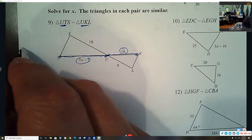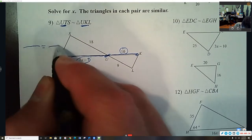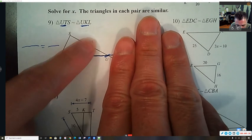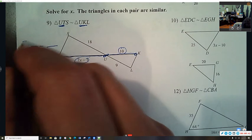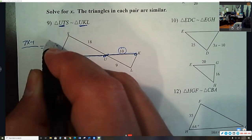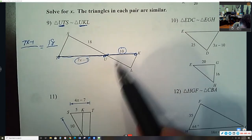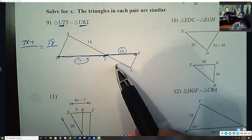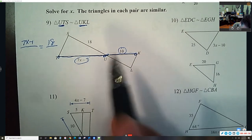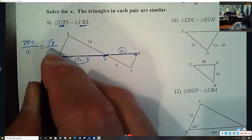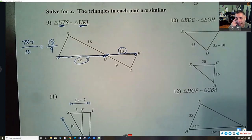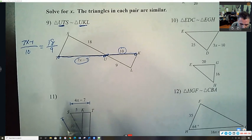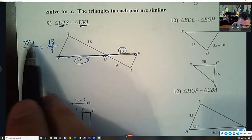So when I write my proportion I can look at this triangle and it has two measurements, 7x minus 1 and 18, and then this triangle has two measurements, the 10 and the 9, but the 10 goes with this and the 9 goes here. So this one I cannot use the shortcut because there's more stuff in here than just x.